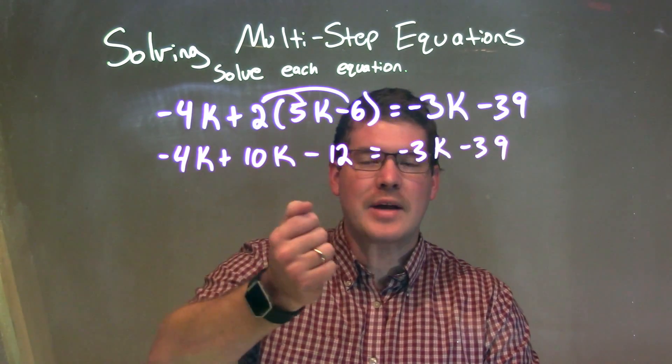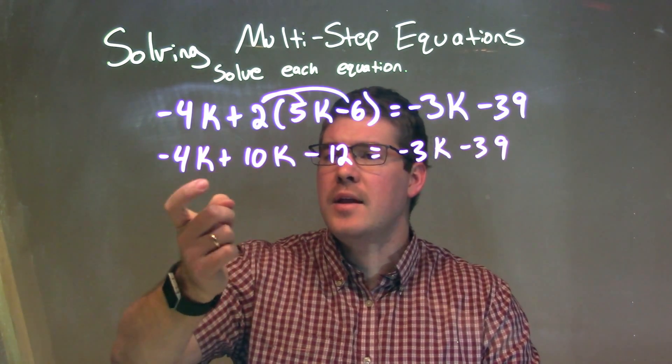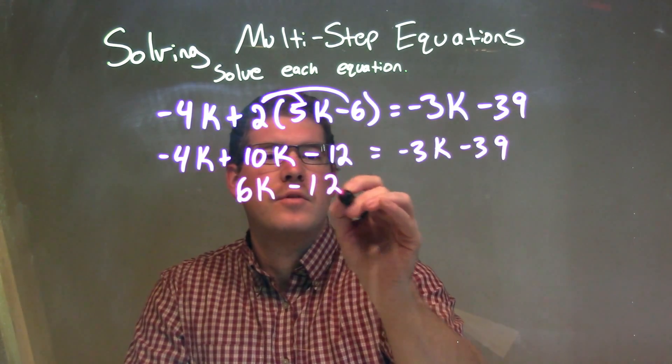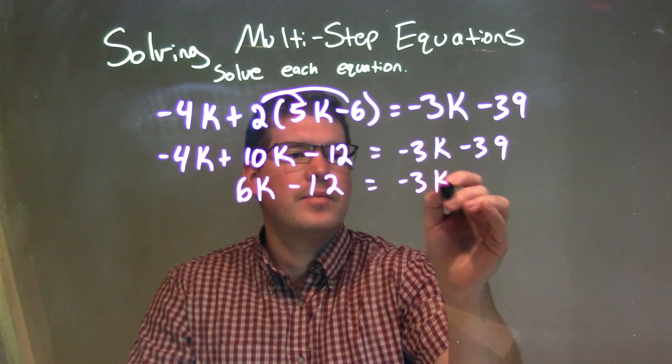So, now let's combine the like terms on each side of the equation. Negative 4k plus 10k is a positive 6k minus 12 equals negative 3k minus 39.